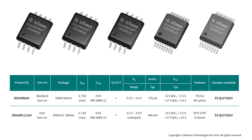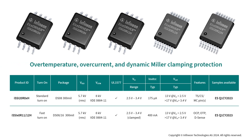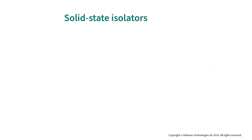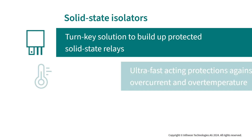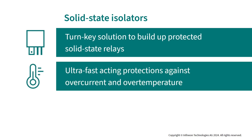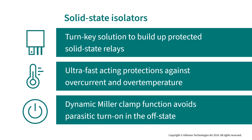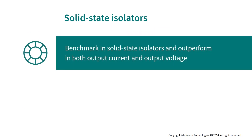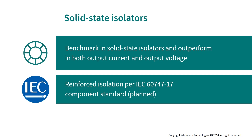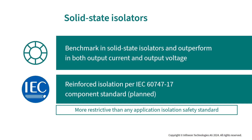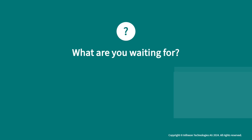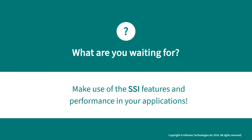The five variants differ by their combination of protection functions: over temperature, over current, and dynamic Miller clamping. Infineon solid state isolators (ISSI) provide a turnkey solution to build protected solid state relays, with ultra-fast acting protections against over current and over temperature. The dynamic Miller clamp function avoids parasitic turn-on when in the off state. They are the benchmark in solid state isolators, outperforming the competition in output current and output voltage, and can provide reinforced isolation according to the IEC 62477-1 component standard, which is more restrictive than any application isolation safety standard.